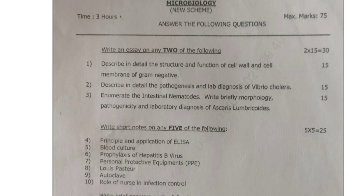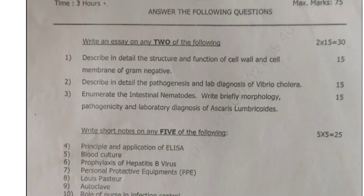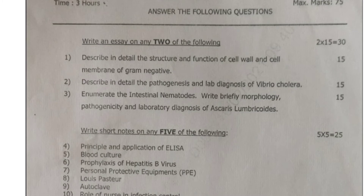In the essay section, write an essay on any two of the following three questions. The first question asks you to describe in detail the structure and function of cell wall and cell membrane of gram negative bacteria. This question is for 15 marks.